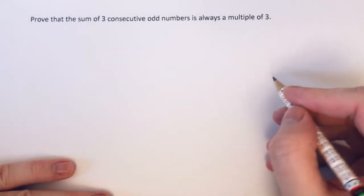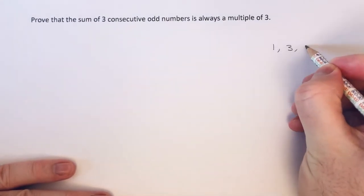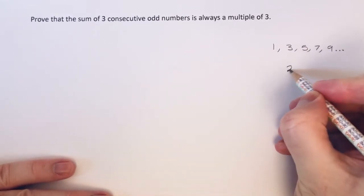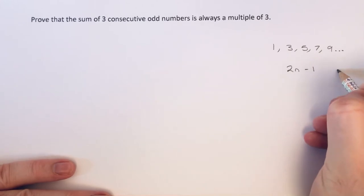So before you start this, you need to know that an odd number sequence has an nth term of 2n minus 1.